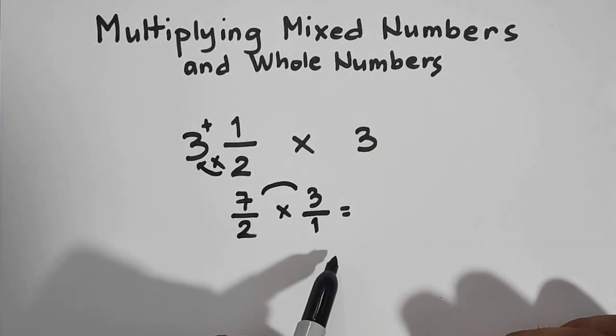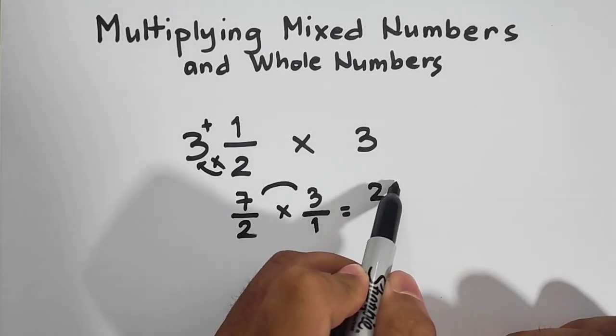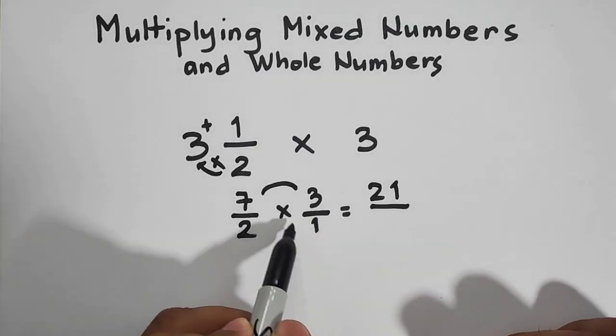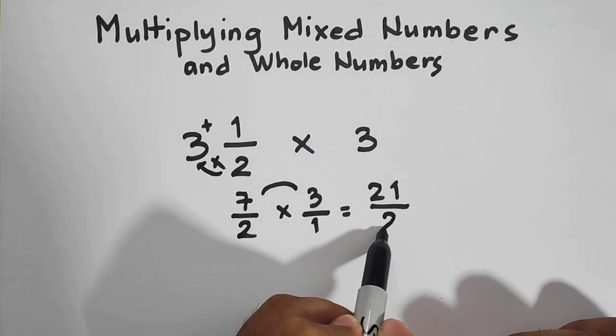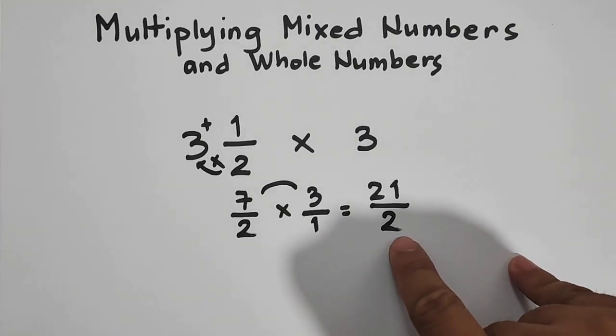3 times 7 or 7 times 3 is equal to 21 over 2 times 1 that would give you the answer of 2. Now, as you can see your answer here is 21 over 2. So we need to convert this one into a mixed number.